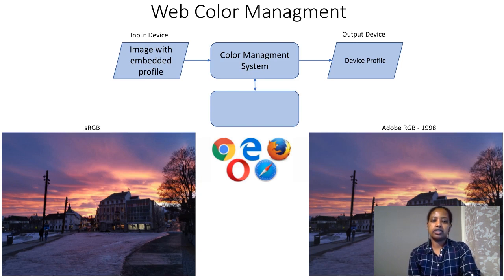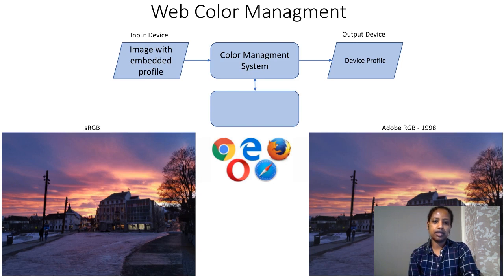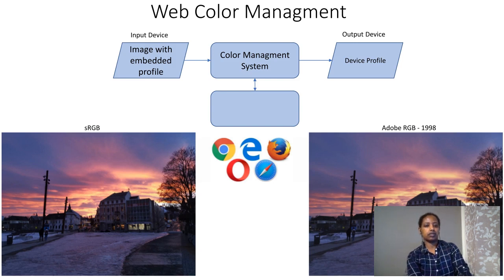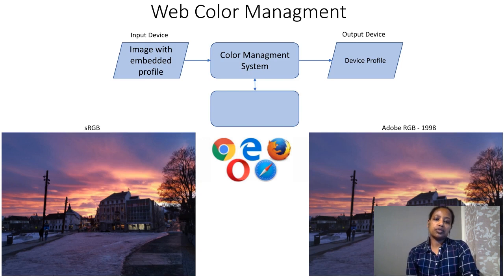The embedded and destination ICC profiles provide the color management module with the color space information and other metadata, including transformation matrices or lookup tables to and from the profile connection space. The color management module of the browser then takes this metadata and applies the transformations.